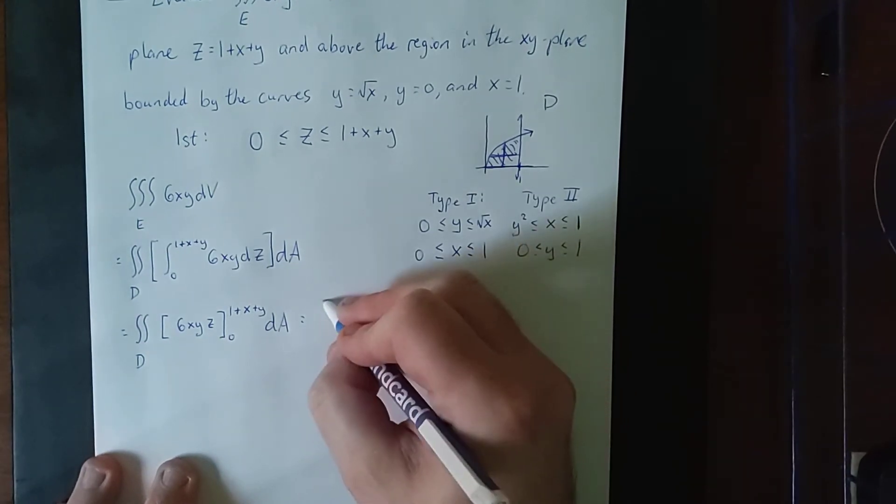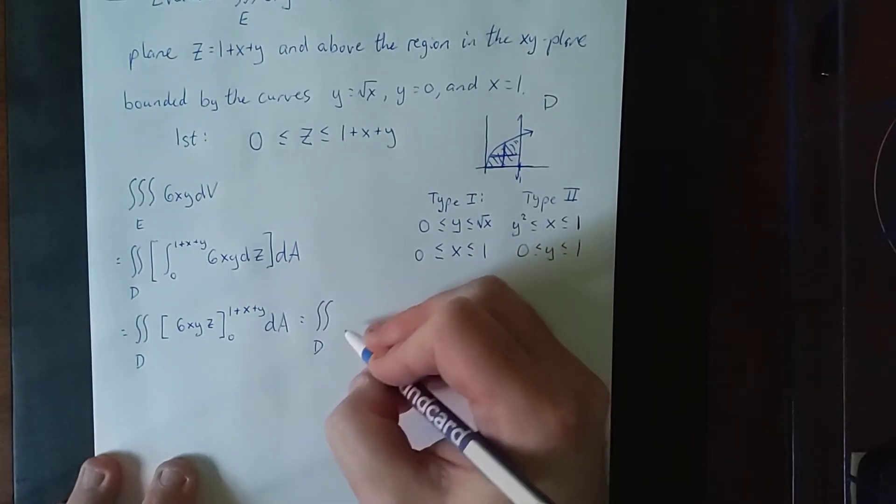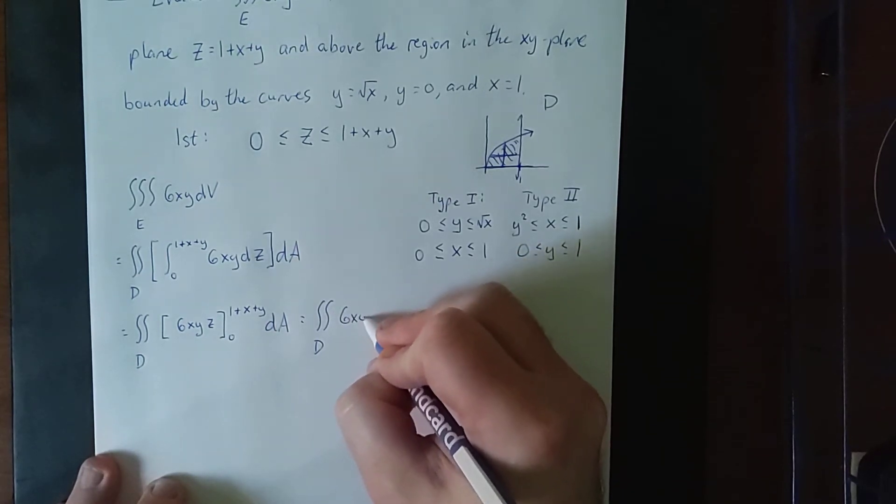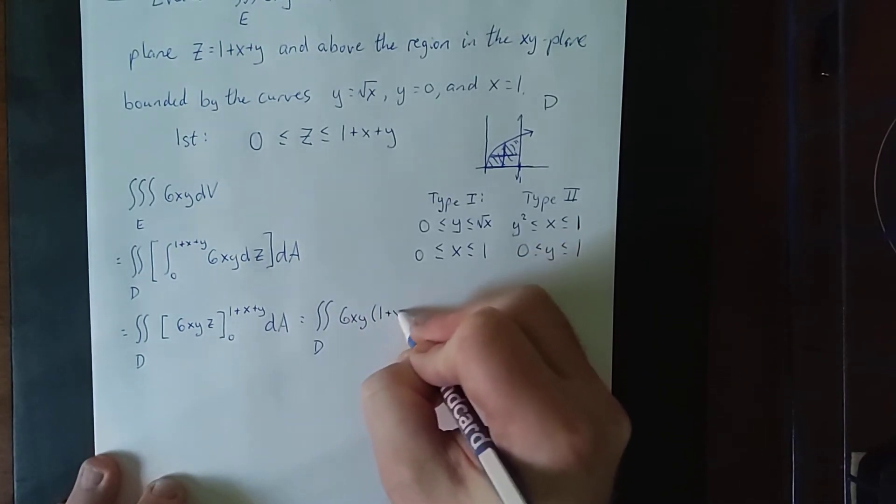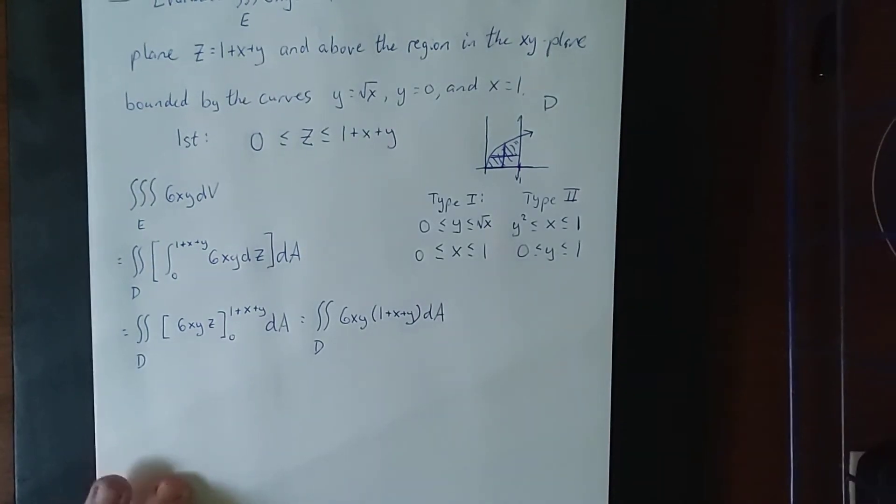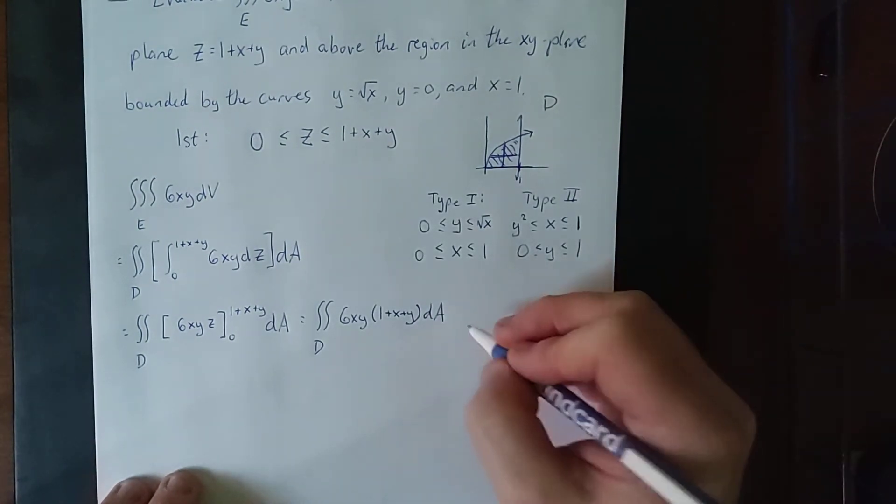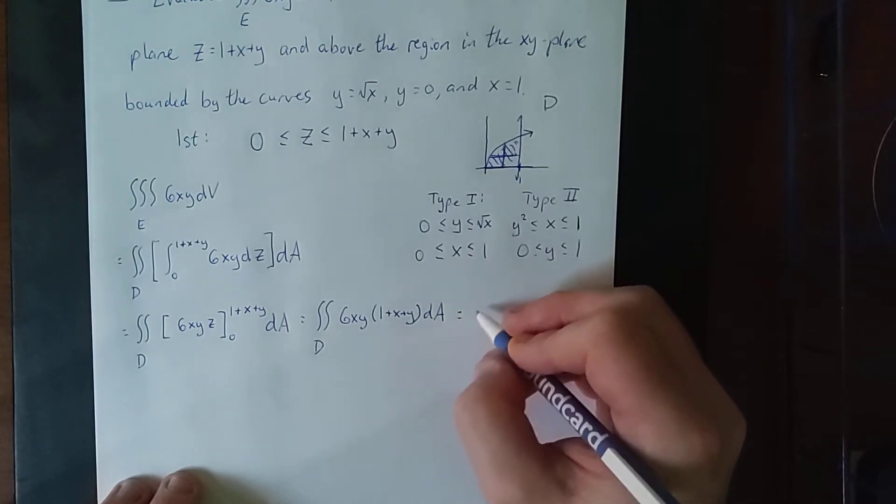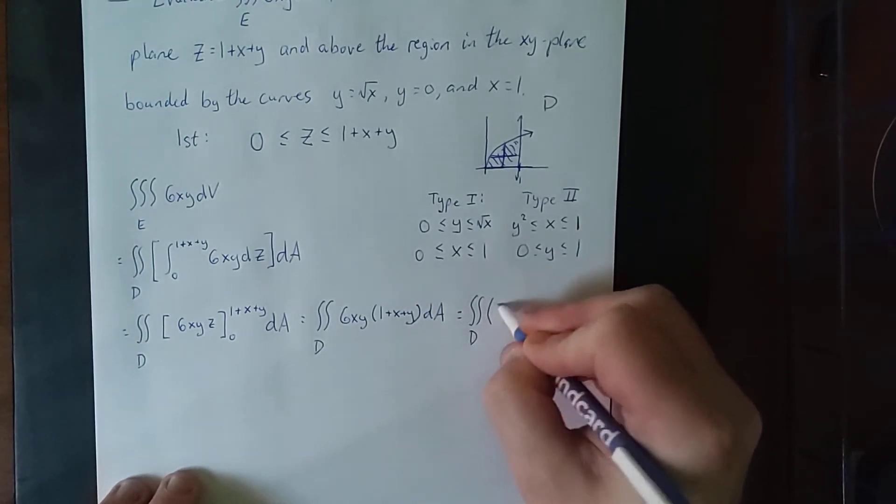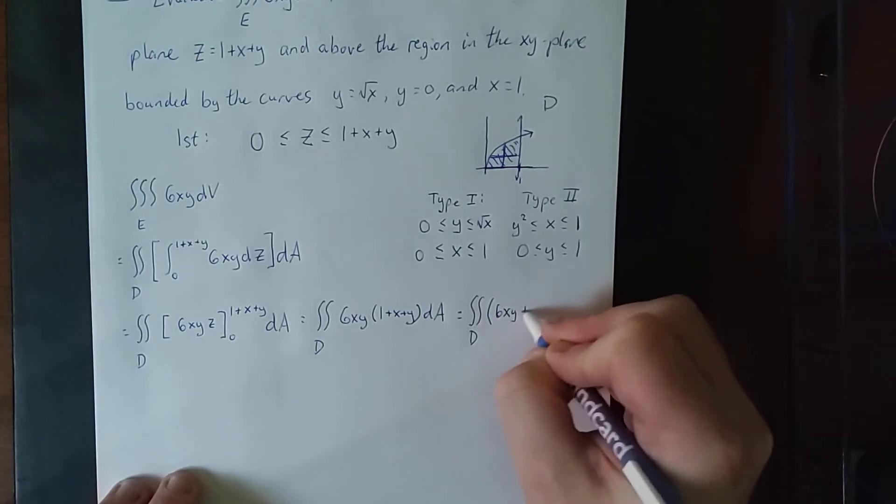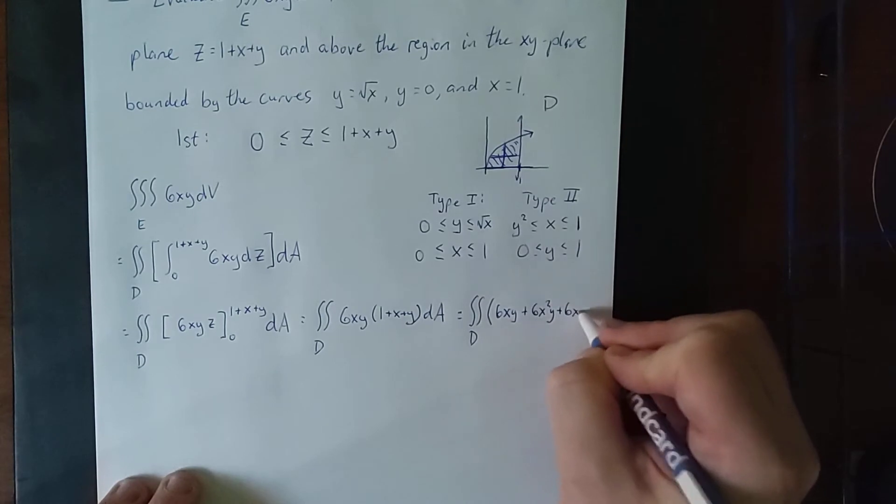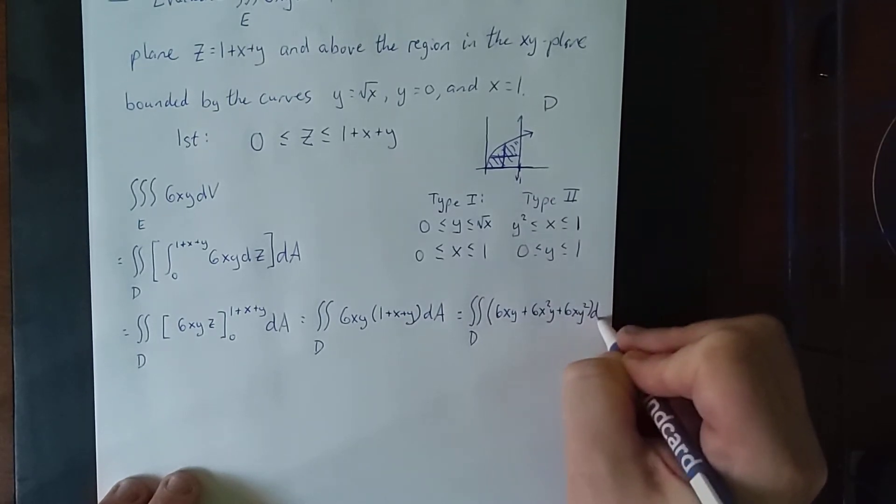And plugging in those bounds, we will get double integral over the region d of 6xy times 1 plus x plus y. In anticipation of the integration that I'm about to do, I think what I would like to do is distribute that 6xy to all three terms. We'll call this 6xy plus 6x squared y plus 6xy squared dA.